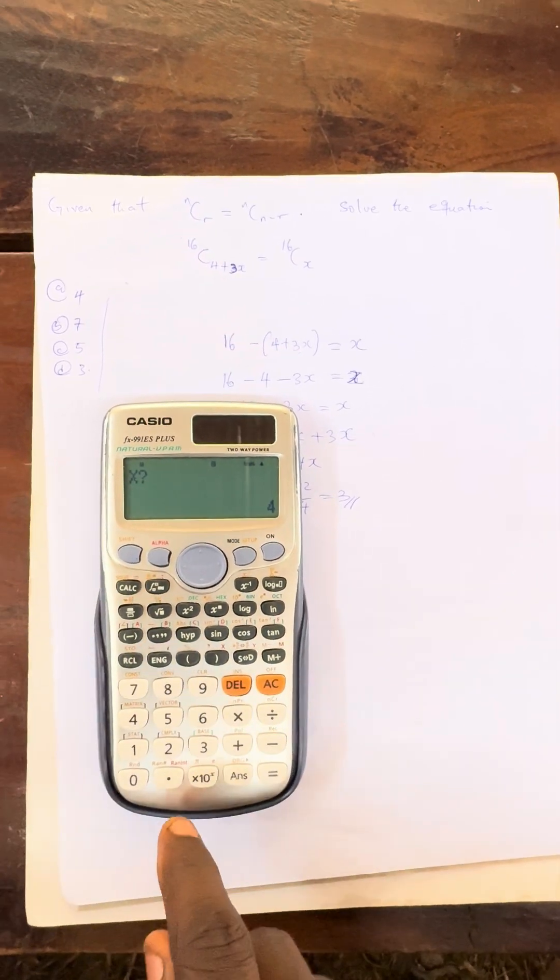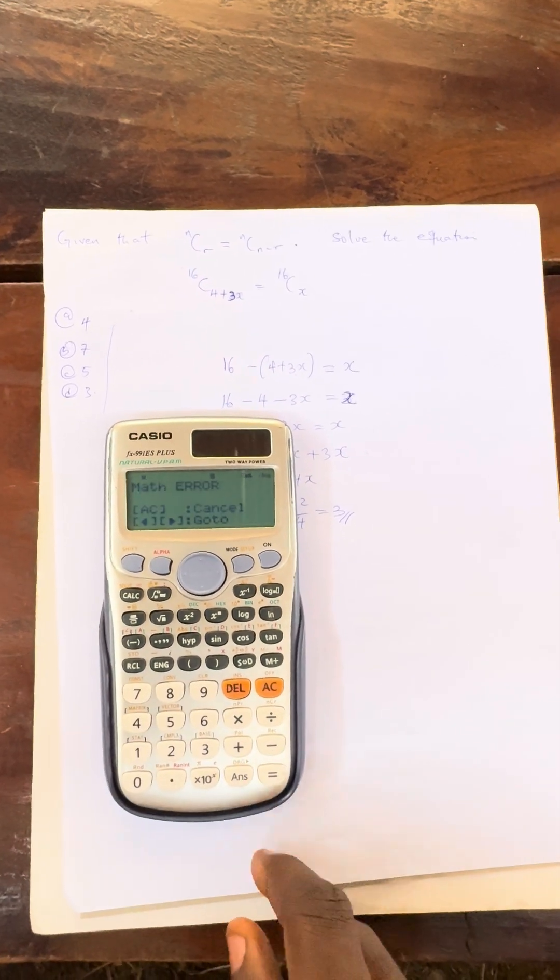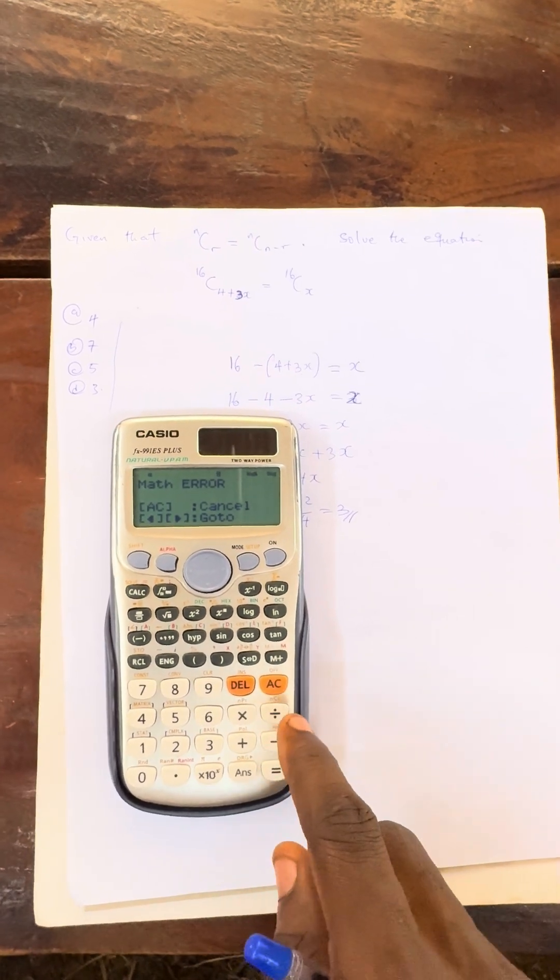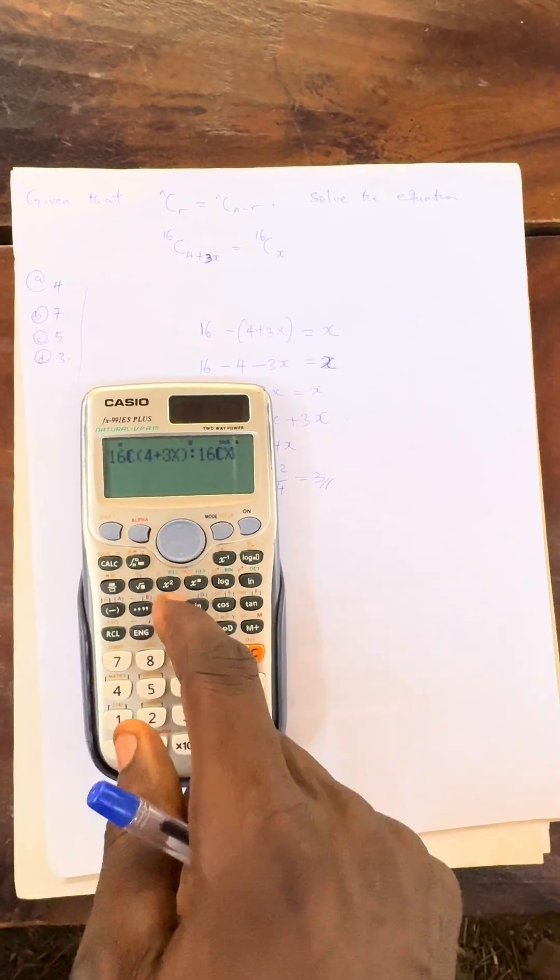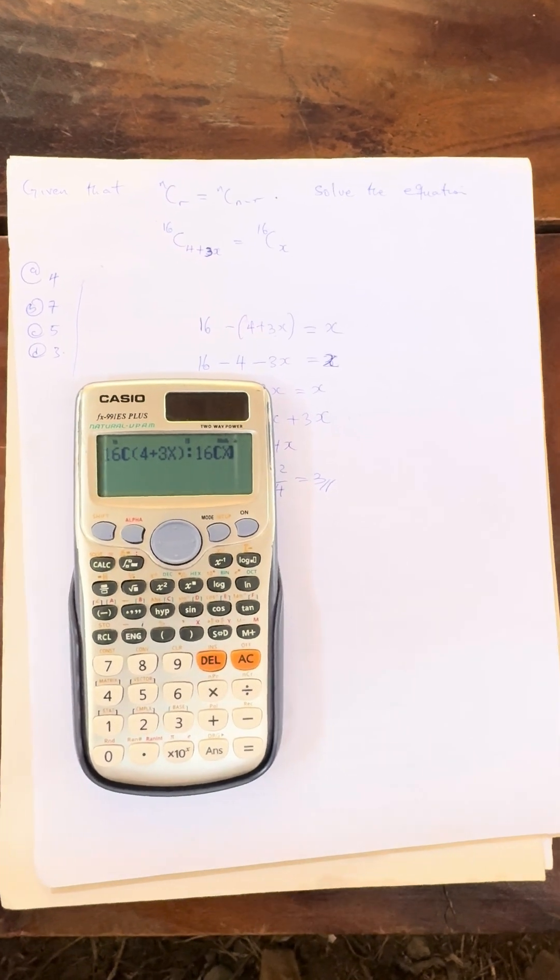Press calculate again, press option B. Option B is 7, then press equals to math error. So this one gives us math error. Let's press AC, then press backward direction back. You can see that it takes me back to the question.